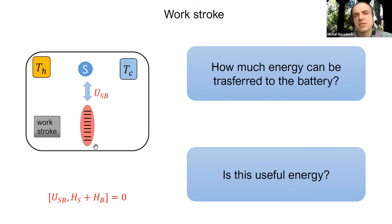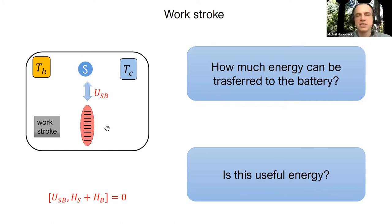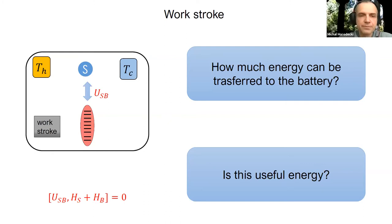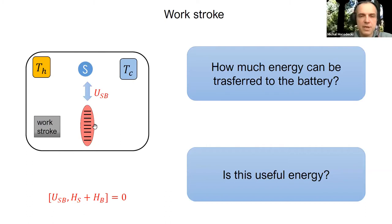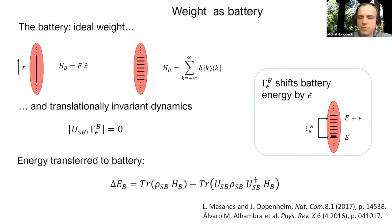First, let's talk about the work stroke. Suppose the system interacts only with the battery. The question is how much energy can be transferred to the battery. To compute efficiency, power, or work production per cycle, we must answer this. But we also need to know whether this is useful energy—energy transferred as heat is not what we want.